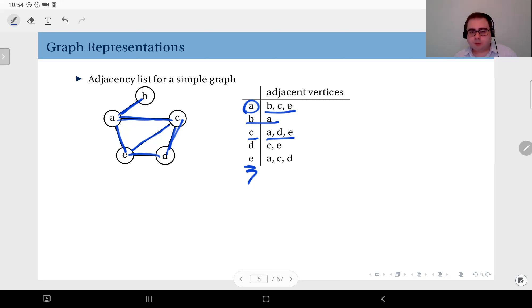We have some redundant info here obviously, but in some applications that might be easier to implement. Therefore this is how you construct an adjacency list.